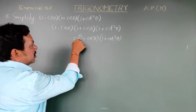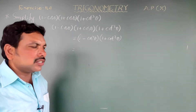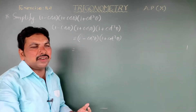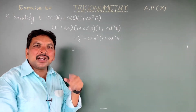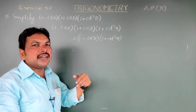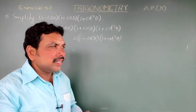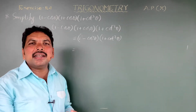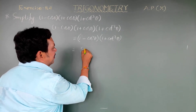1 square means 1 only, so we have (1 minus cos square theta) into (1 plus cos square theta). We know the first trigonometric identity: sin square theta plus cos square theta equals 1, therefore 1 minus cos square theta equals sin square theta.